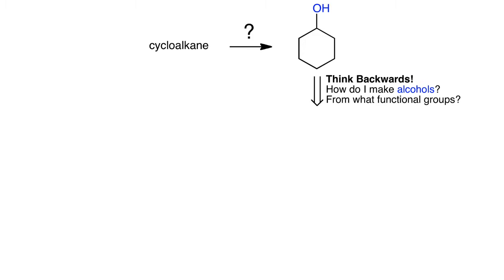For example, we may ask: how do I make alcohols? In other words, from what functional groups can I make an alcohol? And there might be several answers to that question. One answer could be: I make alcohols from alkyl halides. I know that I can do SN1 or SN2 substitution with water or hydroxide to go from halides to alcohols.